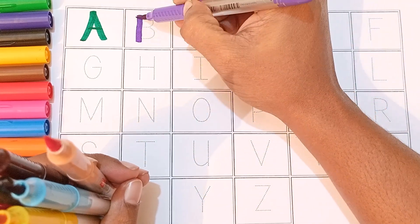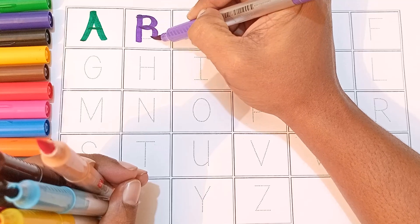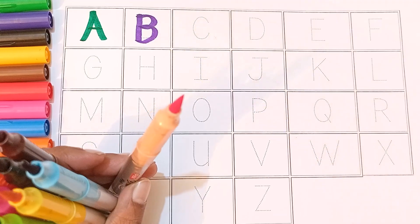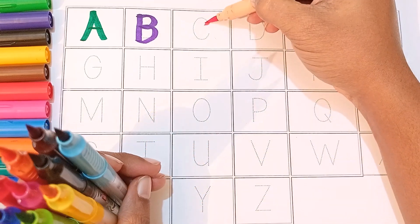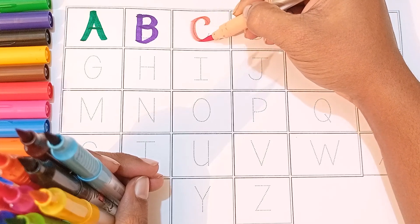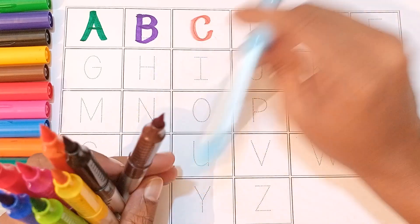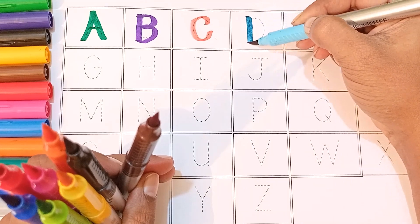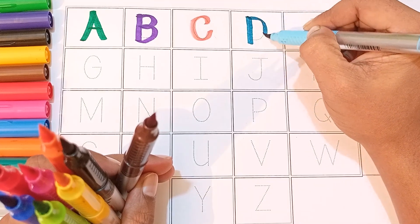A, A for apple, A for apple. B, B for banana, B for banana. C, C for cow, C for cow. D, D for doctor, D for doctor.